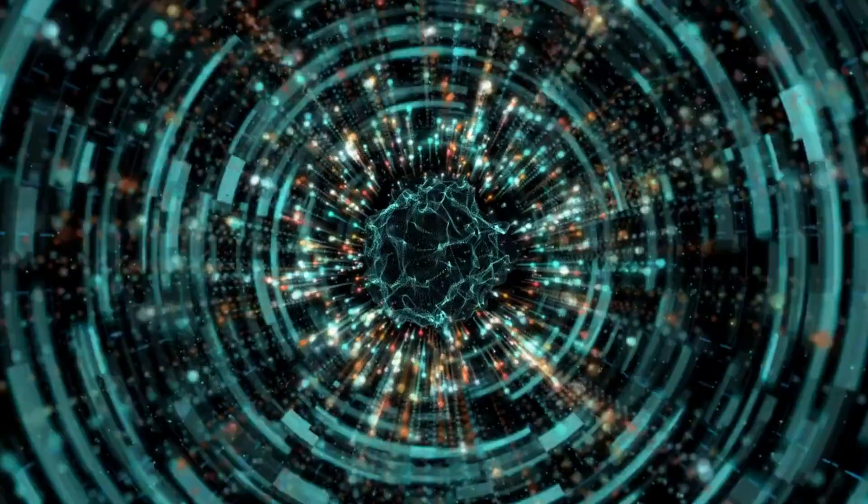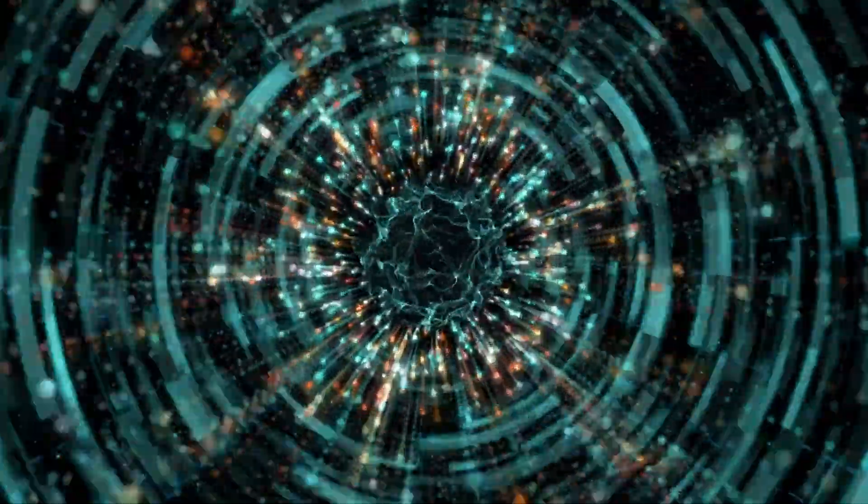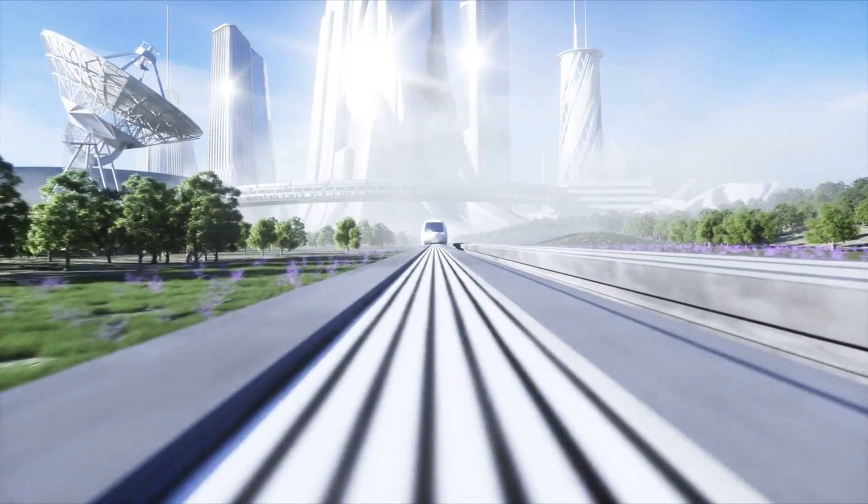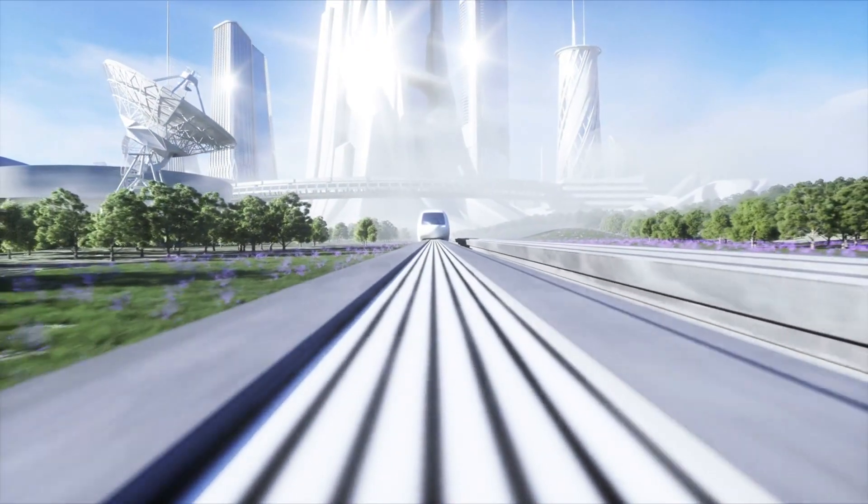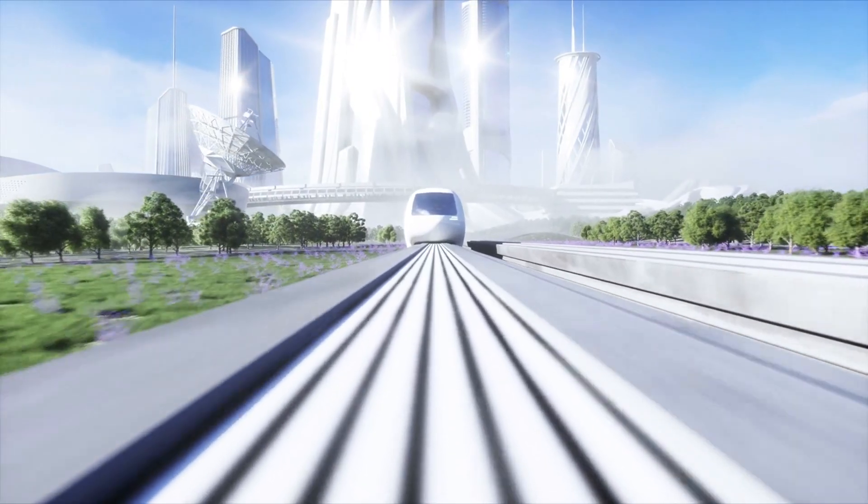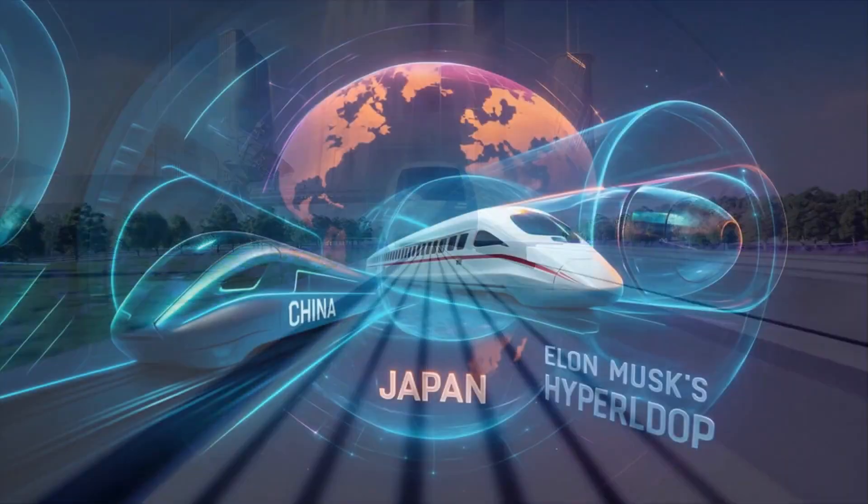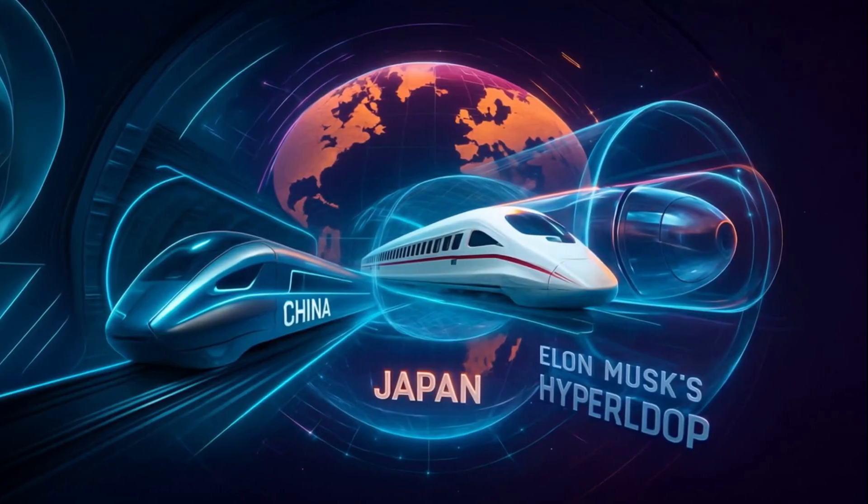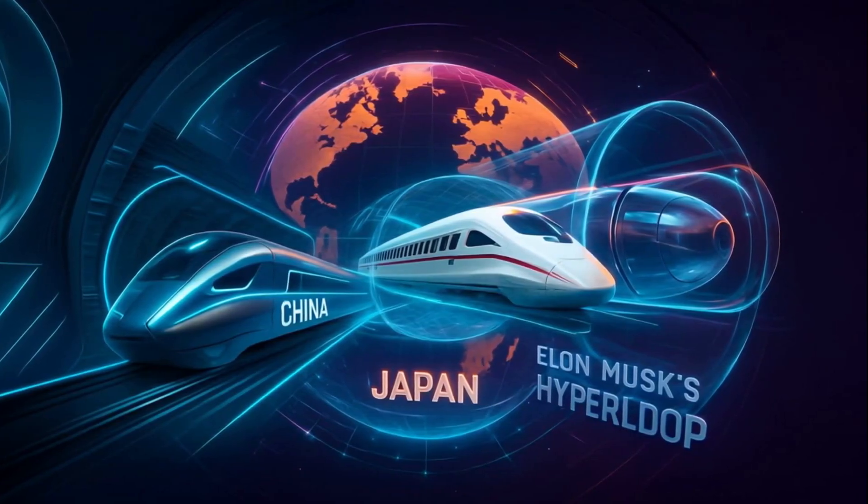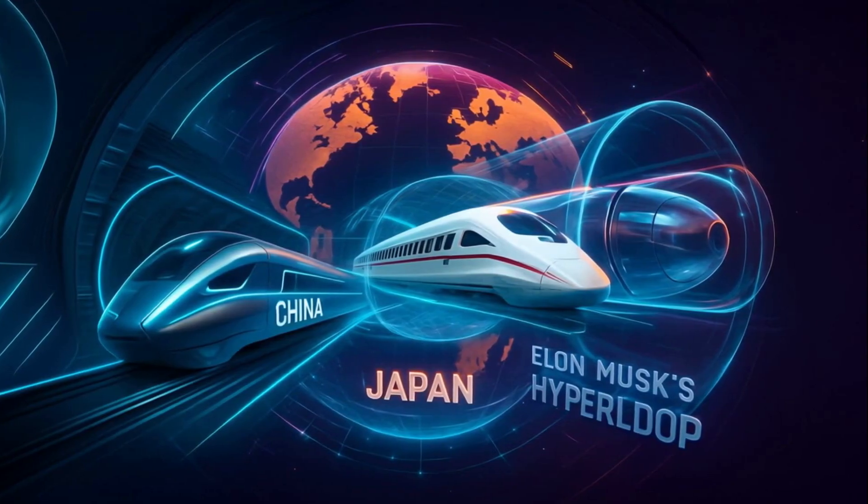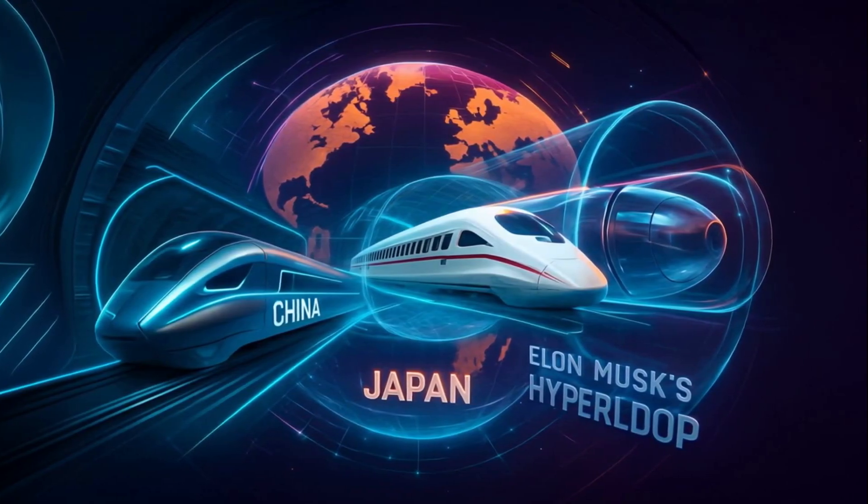China's top-secret T-flight Hyperloop, backed by its military aerospace giant, China Aerospace Science and Industry Corporation, just shattered records with a 623 mph test run in a low vacuum tunnel, edging closer to its 1,000 mph target, aiming to operate its first operational Hyperloop maglev line by 2035, while Elon Musk's Hyperloop is still in the R&D phase.